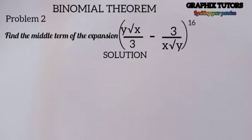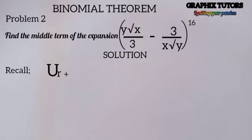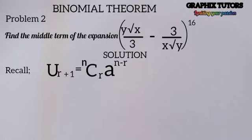So another way of reframing this question is: find the 9th term of the expansion. Now, recall the formula: U subscript (r+1) equals n combination r, multiplied by a to the power of (n minus r), times b to the power of r. This is the formula used to calculate each term involved in a binomial expansion.